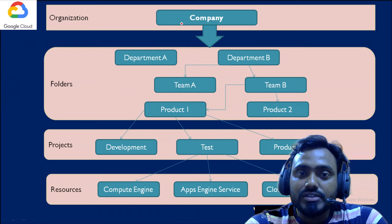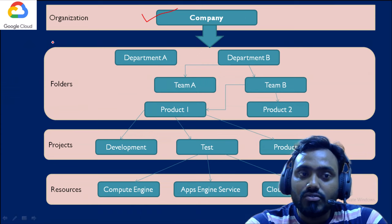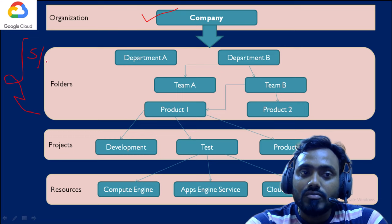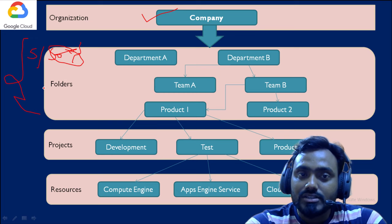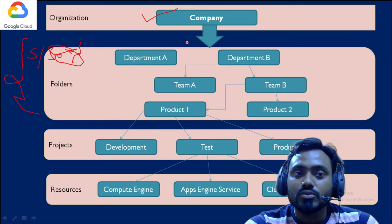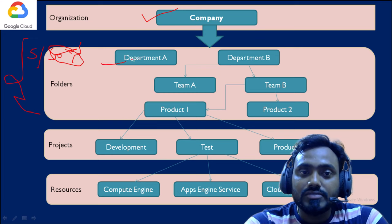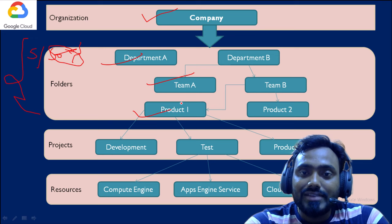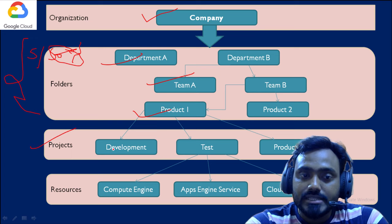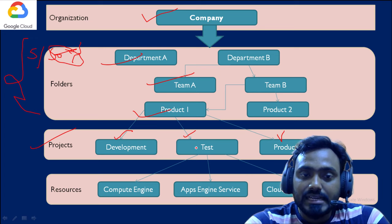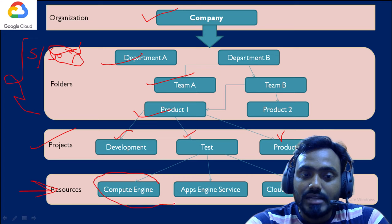To recap: first we have the organization (the company), then folders. For example, under SSUnitech organization we might have a sub-entity like Suceal, and under Suceal we create projects. Suceal maps to a folder. Under folders we have departments, under departments teams, under teams products, and finally the actual projects — development, test, or production — where resources are created.